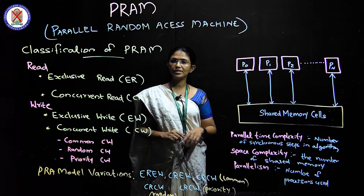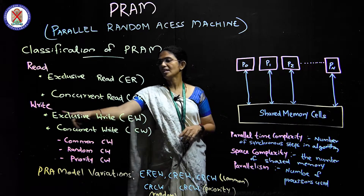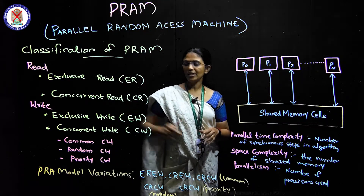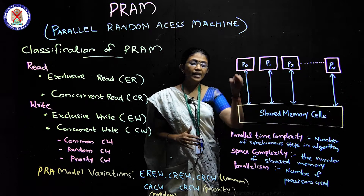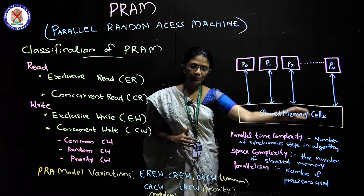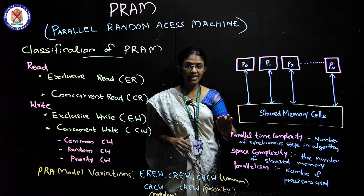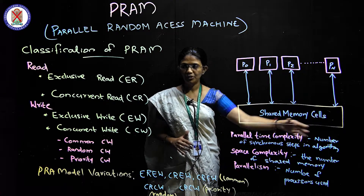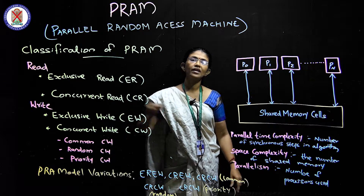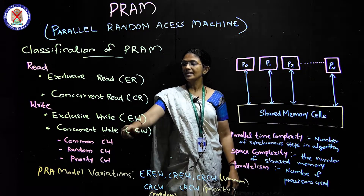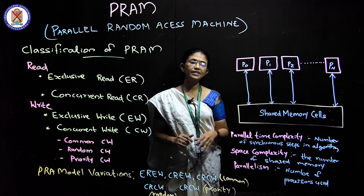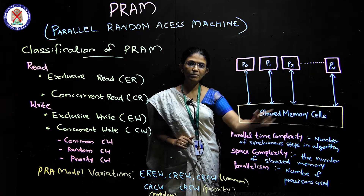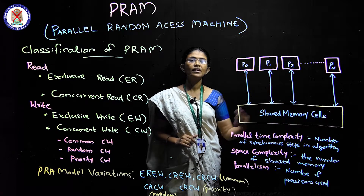The next operation is write. Write operations include exclusive write. Exclusive write means processors write to distinct memory locations — same location cannot be written by two processors simultaneously; they must write to different locations. In contrast, concurrent write means all processes can write anywhere in the shared memory cells.